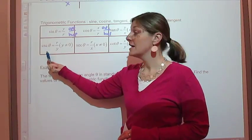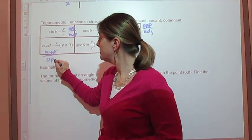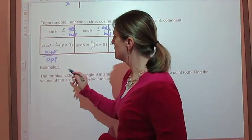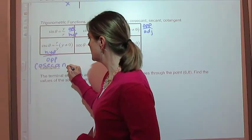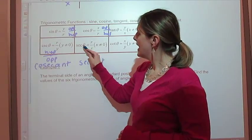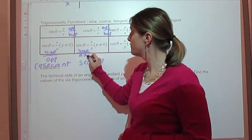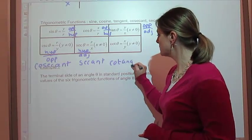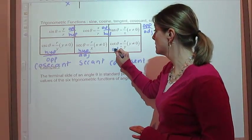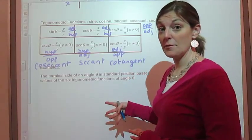And then they have reciprocals. Cosecant is the reciprocal of sine, so it's r over y, or the hypotenuse over the opposite. Cosecant is written c-o-s-e-c-a-n-t, and secant is s-e-c-a-n-t. Secant is the reciprocal of cosine, so it's r over x, or the hypotenuse over the adjacent. And then we have cotangent, which is the reciprocal of tangent, so it's x over y, or the adjacent over the opposite. So those are our six trig functions.